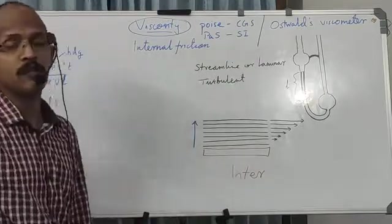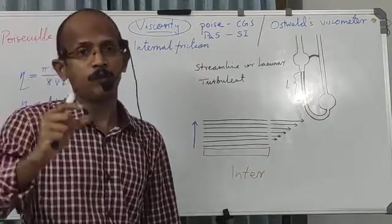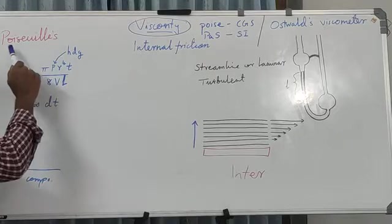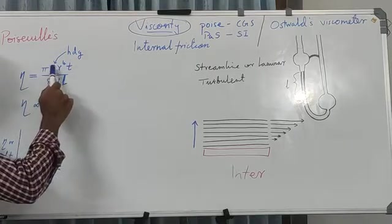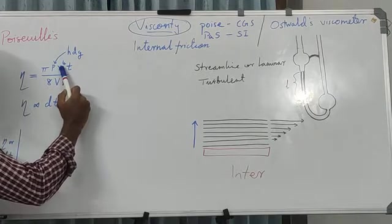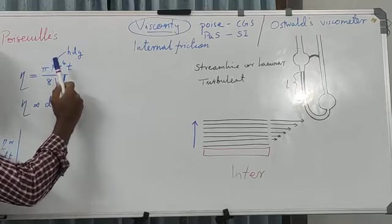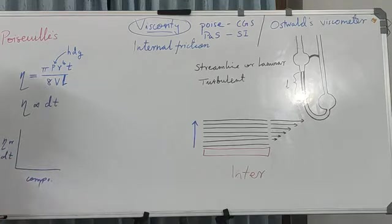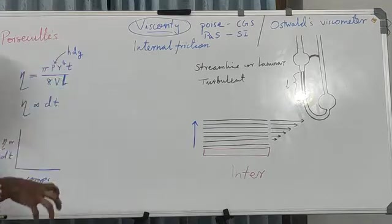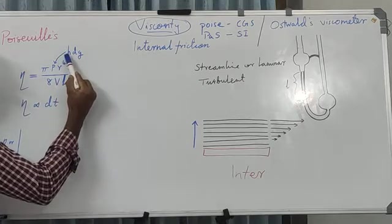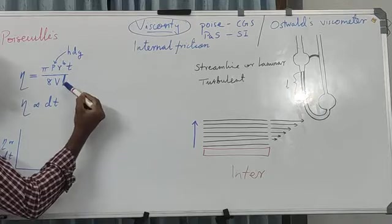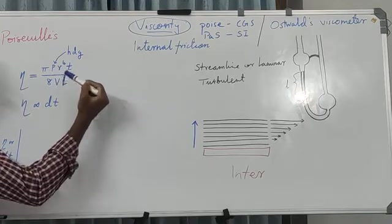Now we consider the movement of liquid in a capillary tube or narrow tube. The coefficient of viscosity eta is given by Poiseuille's equation: eta equals pi P r⁴ T divided by 8 V L. Here, T is the time of flow, r is the radius of the capillary tube, P is the driving force or pressure exerted by the liquid column above — which can be replaced as H D G, where D is density and H is the height of the liquid column. V is the volume of liquid flowing, and L is the length of the capillary tube.